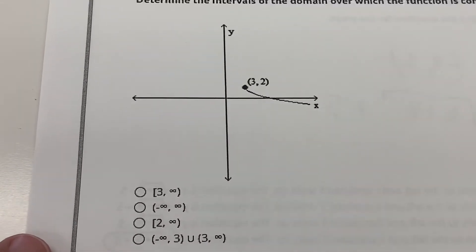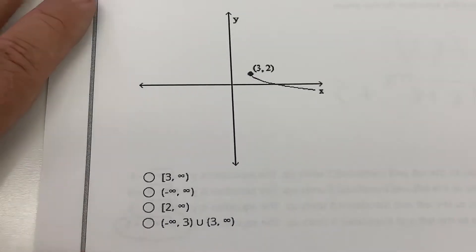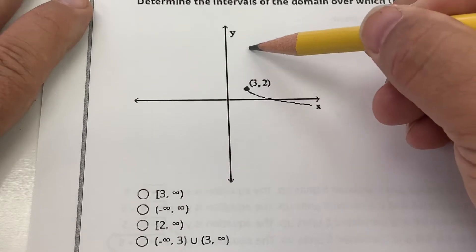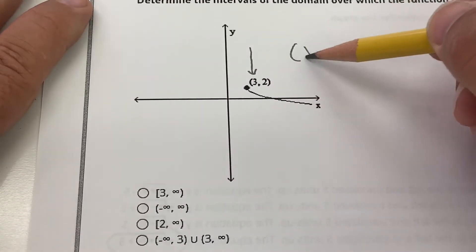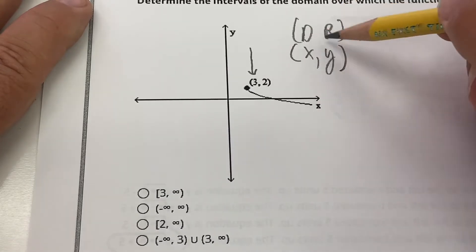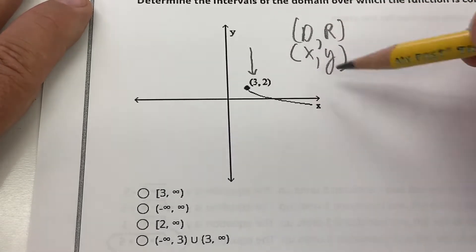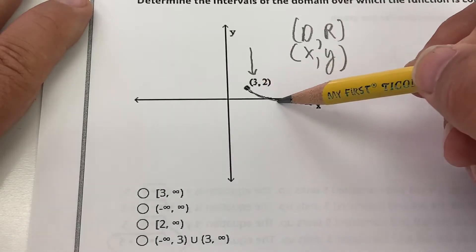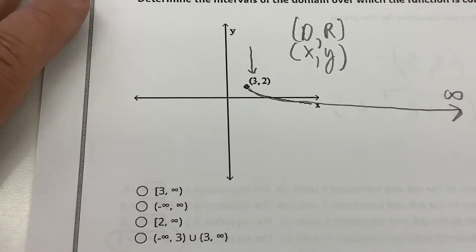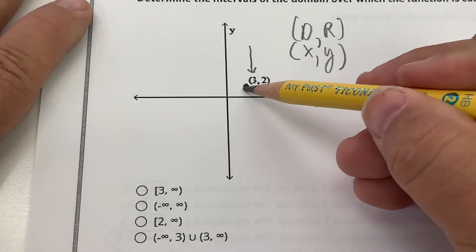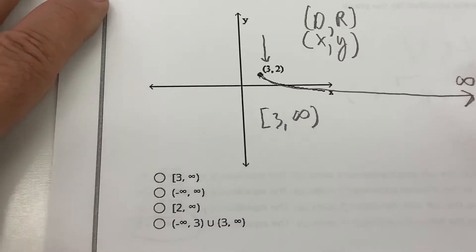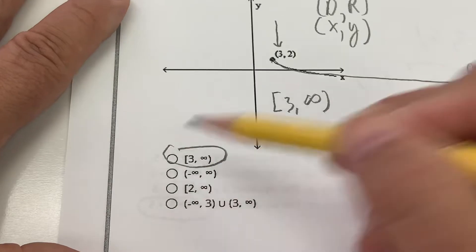This one's upside down. They want me to find the domain where it is continuous — no holes or anything. The domain starts at the x-value of 3. Remember: x comes before y, D comes before R. The x-values go from 3 to the right forever, so the domain is [3, ∞) — choice A.